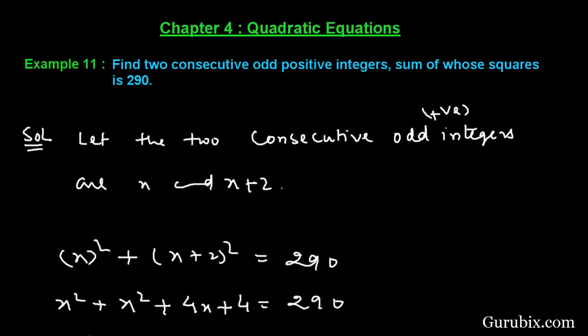Welcome friends, let us solve Example Number 11 of Chapter 4. The example says find two consecutive odd positive integers, sum of whose squares is 290. So first of all we shall let that the two consecutive odd positive integers are x and x plus 2.